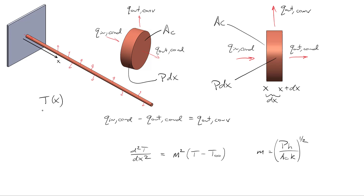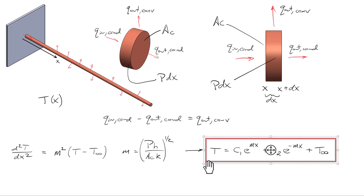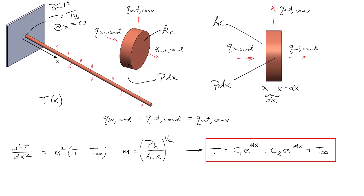We now have a second-order differential equation with respect to x. We'll find that we need two boundary conditions to solve this. The general solution looks like T minus T_infinity equals C1·e^(mx) plus C2·e^(-mx), where C1 and C2 are constants of integration. To find them, we apply two boundary conditions. One common condition is to specify the temperature: T equals T_base at x equals zero — that's our first boundary condition.